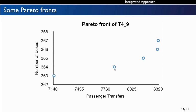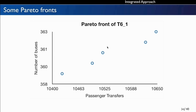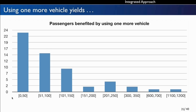In another example — instance number 9 of Type 4 — we see a similar case: by using 364 vehicles instead of 363 vehicles, we are able to benefit more than 600 additional passengers. Finally, there is another Pareto front showing a non-convex shape, so a weighted objective function would not be capable of representing all solutions on this Pareto front, while the epsilon-constraint method allows us to find the exact Pareto front.